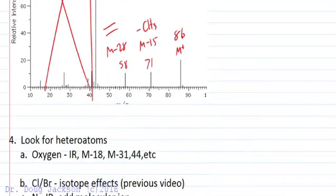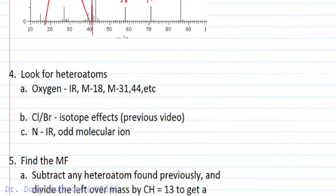Now what do we do? Well, we look for evidence of heteroatoms. We can use the IR. We can look for M minus 18, which is loss of water indicating an OH or an oxygen in the compound.